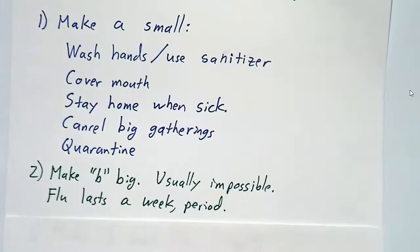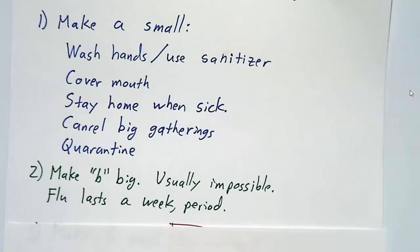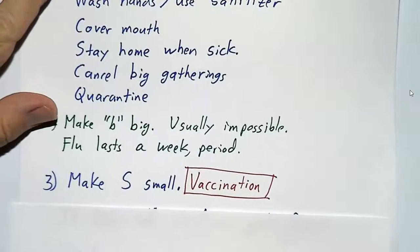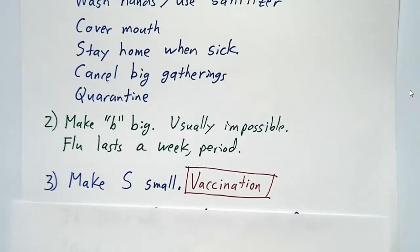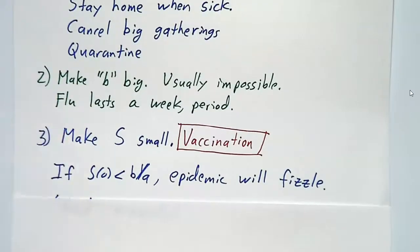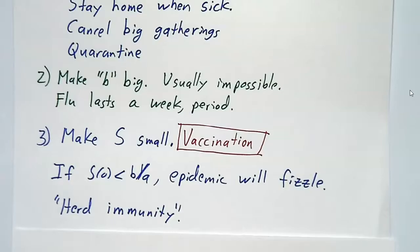You might also want to make b big, but you can't — that's a matter of biology. The flu lasts a week no matter what you do. There are some diseases where drugs can help a little bit, but mostly you just have to wait it out. There's nothing you can do on the b end. Finally, you want to make S small, and that's where vaccinations come in. Every time somebody gets a vaccine, they stop being susceptible — it's as if they've become recovered; they're immune. So as long as the number of susceptibles is below b over a, the epidemic will never start; it'll just fizzle. This is called herd immunity: if enough people are resistant, nobody gets sick.